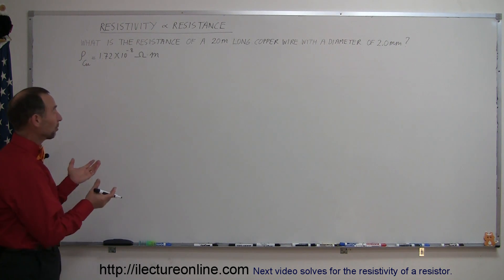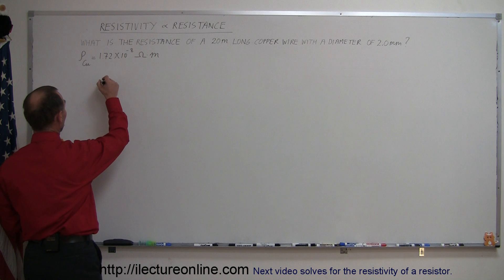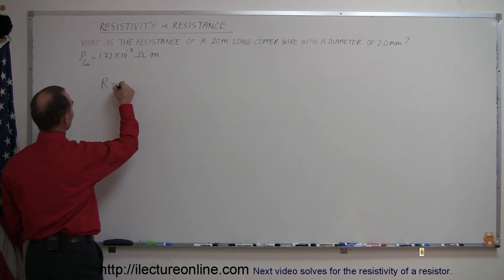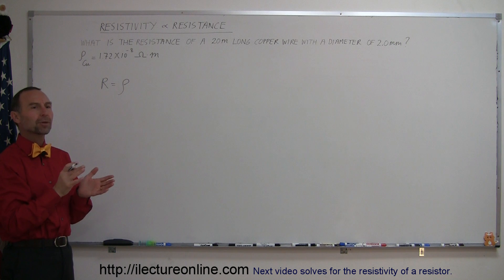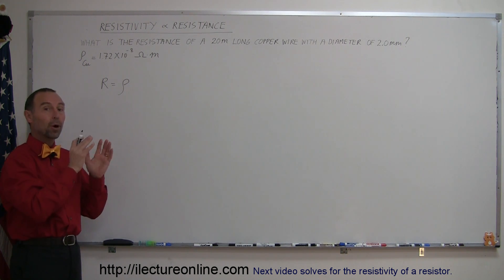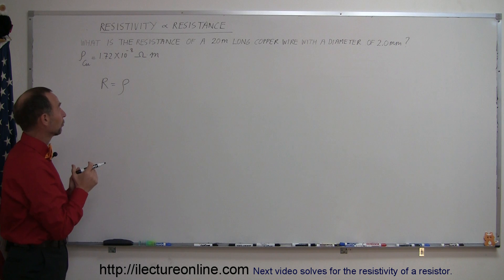The relationship between resistivity and resistance is as follows. The resistance of any object is equal to the resistivity of the material. Resistivity is the property of the material that describes how much it opposes the flow of current or flow of charges.